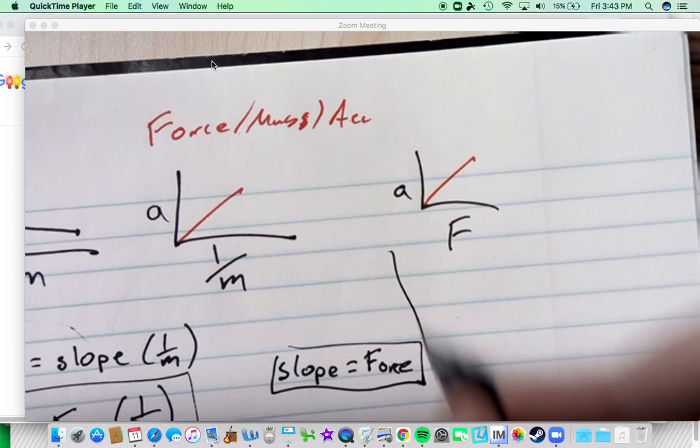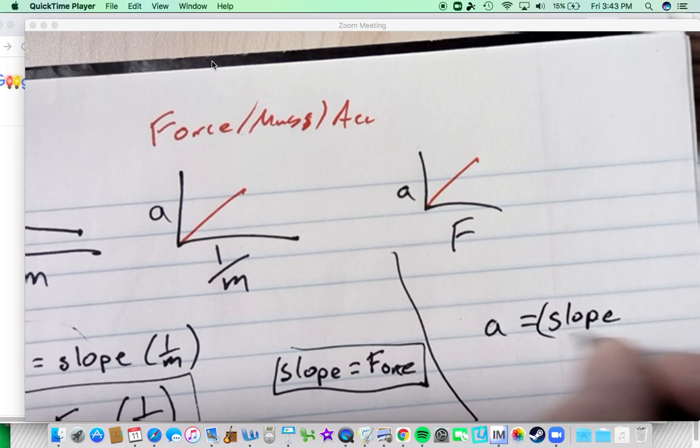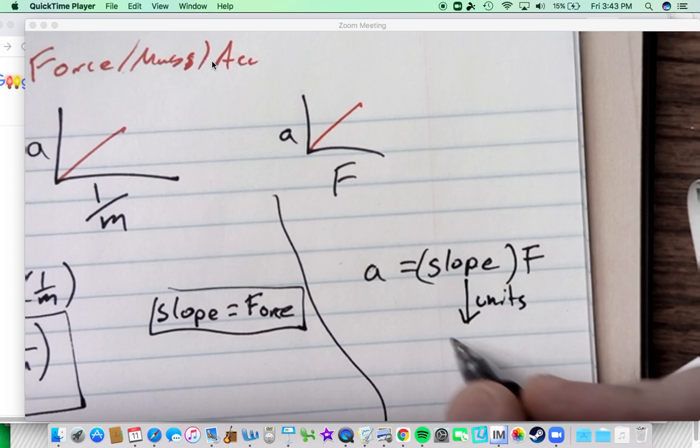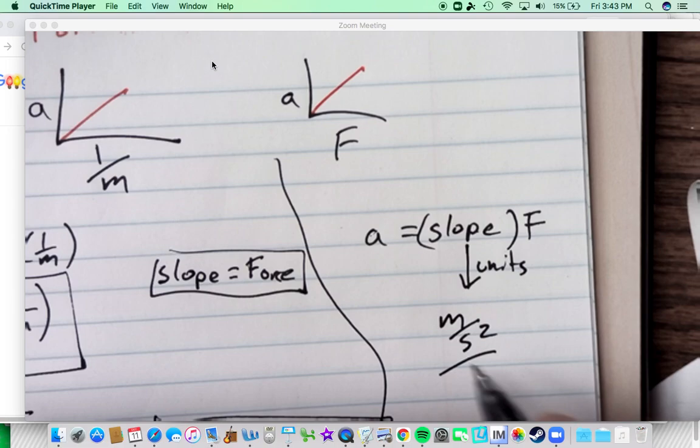This one was linear. And we had acceleration then equaling the slope times the force. And this one was a little bit crazier in terms of units. Our units for this slope would have been meters per second squared per, a lot of people said Newtons,